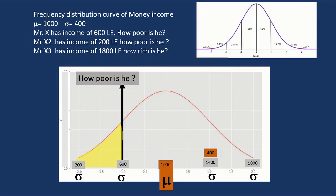We know that this is one standard deviation below the mean, so 16% should be below that. So we can say that Mr. X is poor, he gets 16% of the people that have income less than he has.